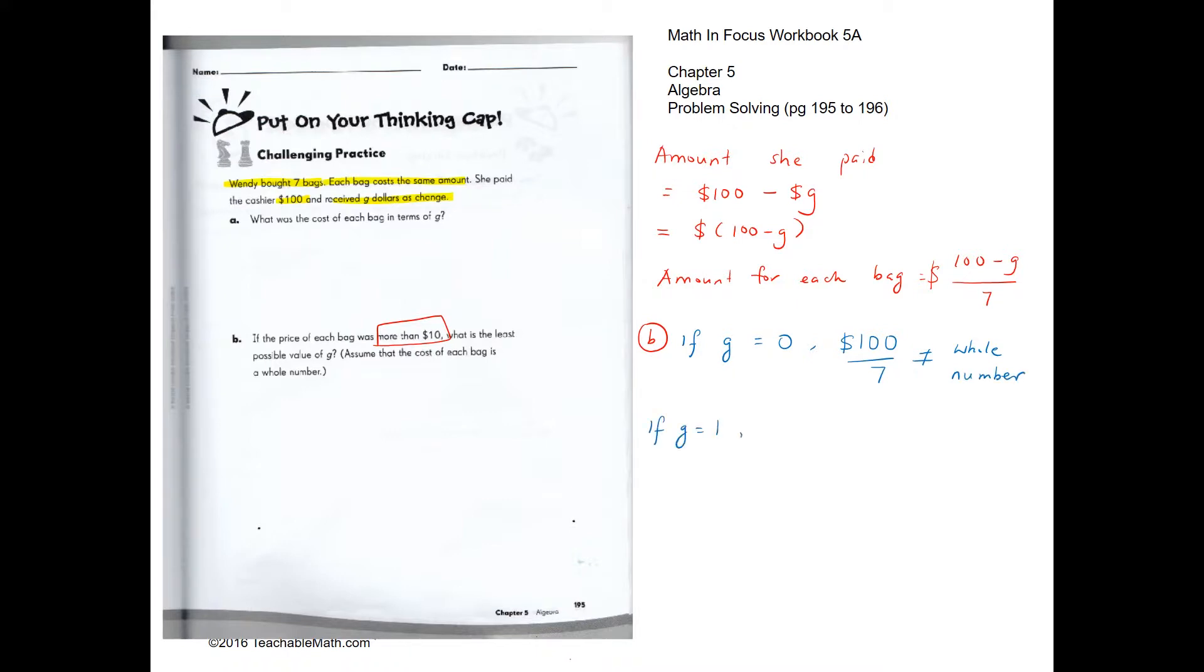If G equals to one, then what it means is the amount that she spends would be $99 divided by seven. However, this is not a whole number either. So therefore, G is not equal to one.